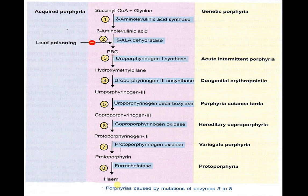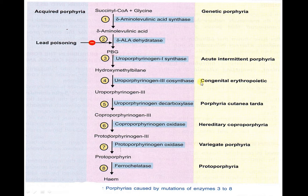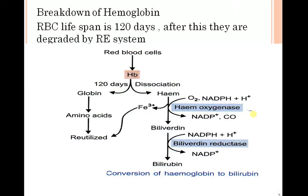In heme formation there are eight steps, and at each step a specific disease may arise. In the case of delta-aminolevulinic acid synthase deficiency, one gets sideroblastic porphyria. Acute intermittent porphyria results from uroporphyrinogen synthase deficiency. Congenital erythropoietic porphyria involves uroporphyrinogen III cosynthase deficiency. Erythropoietic protoporphyria involves ferrochelatase deficiency.